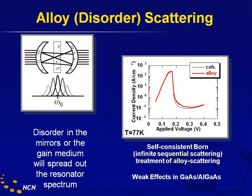Then there is a third mechanism, which is alloy disorder scattering. In the optical equivalent, that is sort of impurities in your mirrors or in your active gain medium — it's not all homogeneous. A true alloy is disordered; there is no perfect ordering in an alloy. We will have later lectures on alloy disorder scattering from a fundamental point of view of representing the alloy disorder explicitly. In NEMO 1D, we took a statistical approach and developed scattering self-energies that describe the alloy disorder. It turns out in RTDs, this alloy disorder is not all that critical — it raises the valley current, similar to acoustic phonon scattering, which in general is also not very strong.